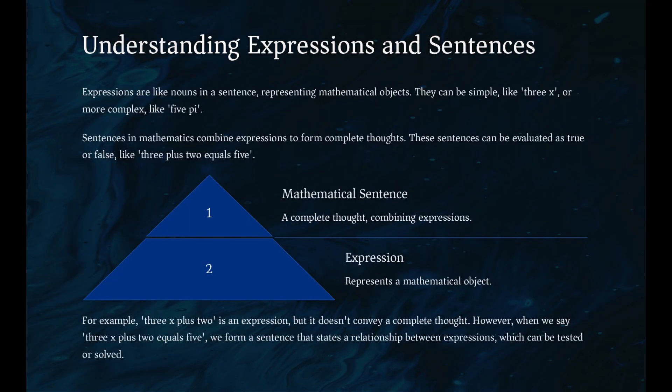Expressions are names given to objects of interest in mathematics, such as 3x, 5 pi, or 2 plus 3. These are analogous to nouns in a sentence.